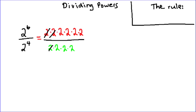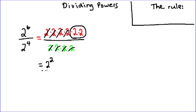Canceling 2 and a 2, 2 and a 2, 2 and a 2, 2 and a 2. You can see what's left on top is equal to 2 to the power of 2. We could say that's over 1 if you want to think about fractions and simplifying fractions.